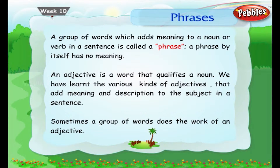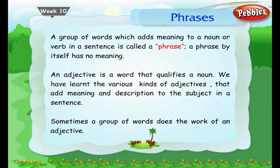A group of words which adds meaning to a noun or verb in a sentence is called a phrase. A phrase by itself has really no meaning. An adjective is a word that qualifies a noun, which we have learnt before. Sometimes a group of words also does the work of an adjective.